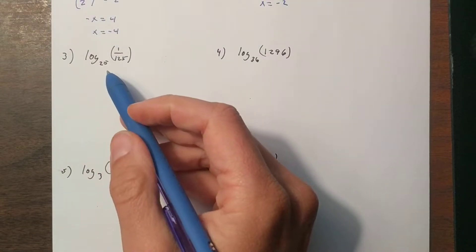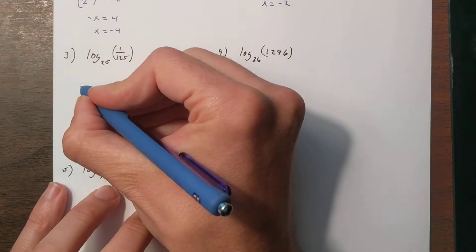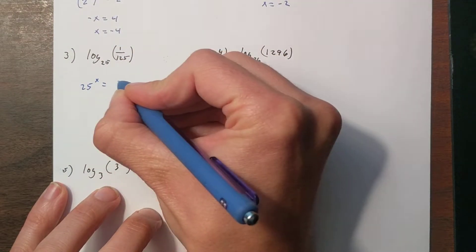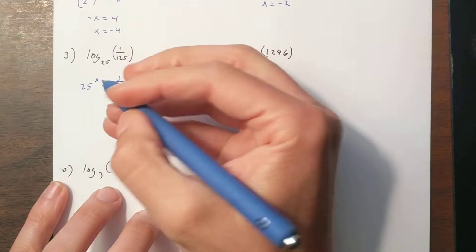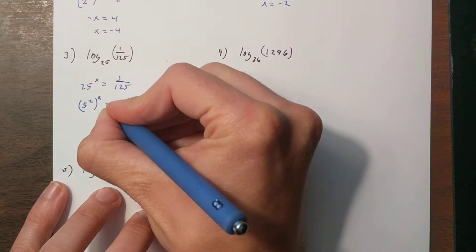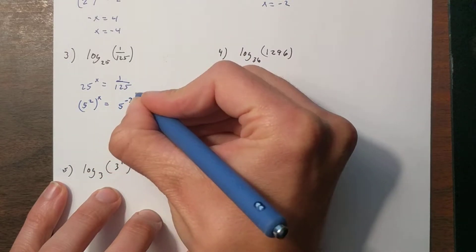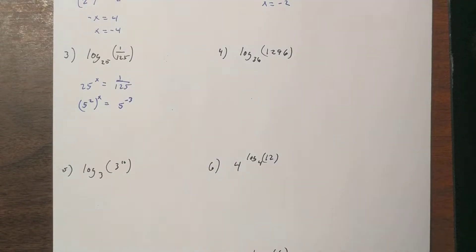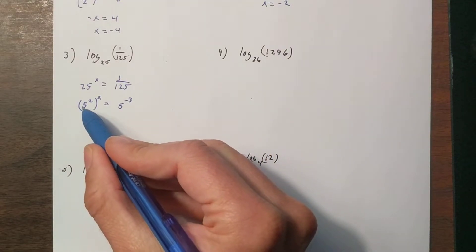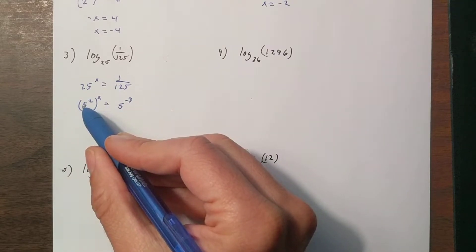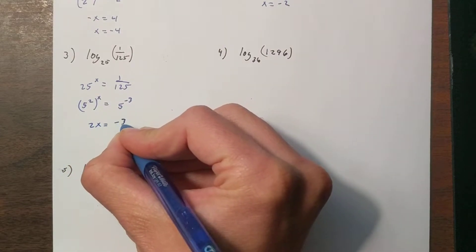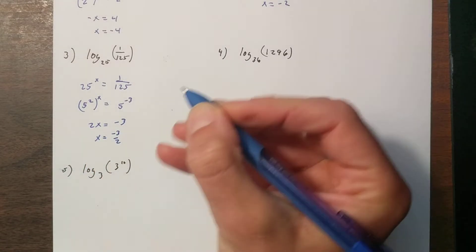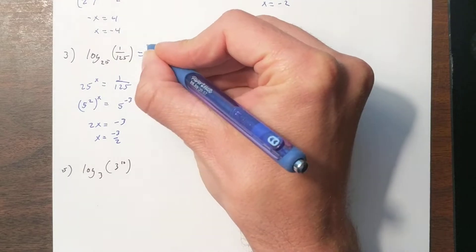Number 3: log base 25 of 1 over 125. This is asking: 25 to what power is 1 over 125? Notice 25 and 125 are both powers of 5. So this becomes 5 squared to the x equals 5 to the negative 3 — it's a fraction so it's negative, and 5 cubed is 125. The bases cancel and the powers multiply, giving us 2x equals negative 3, so x equals negative three-halves.